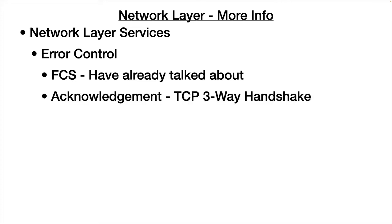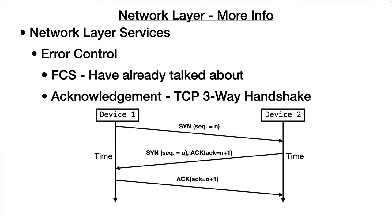There's also the TCP three-way handshake. If a device wants to communicate, it sends a synchronization request to device 2. Device 2 acknowledges and sends back its own synchronization request, and then device 1 sends an acknowledgement confirming it received both. This three-way handshake happens for each packet or set of packets to ensure communication is happening correctly.